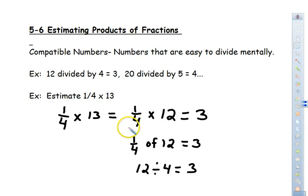Well good afternoon. We are on 5-6 estimating products of fractions. What we want to talk about first of all is compatible numbers. Numbers that are easy to divide mentally. Numbers that go into other numbers equally as well. Those are the ones that are compatible.